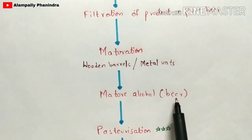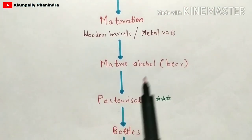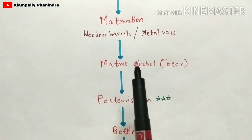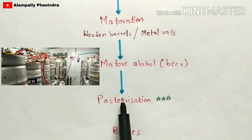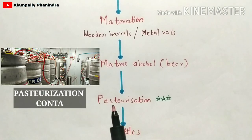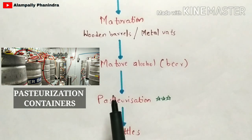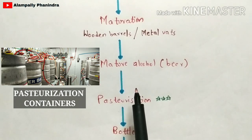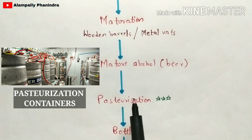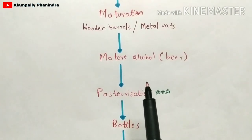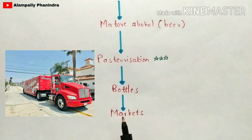After maturation, the most important step is pasteurization. The mature beer is taken and placed in containers, and heat is applied — either from below or by electricity — to kill the microorganisms present in the mature beer. This process is called pasteurization. After pasteurization, pure beer free of microorganisms is produced, then filled into bottles and supplied to markets for consumption.